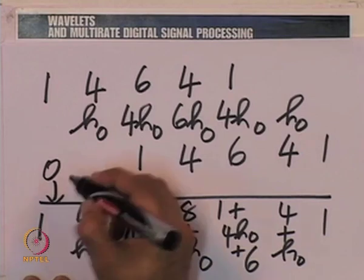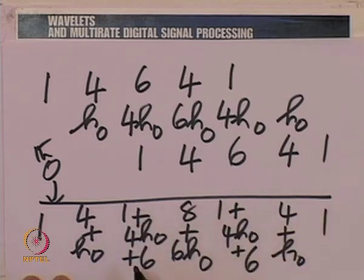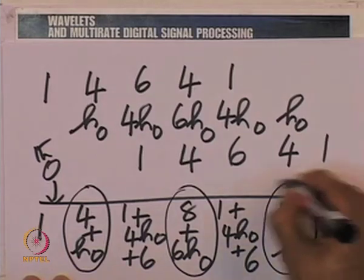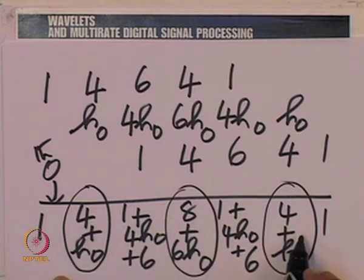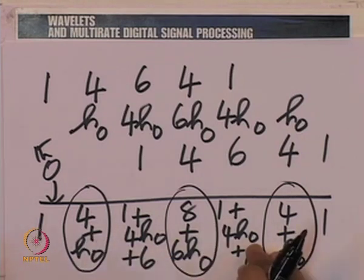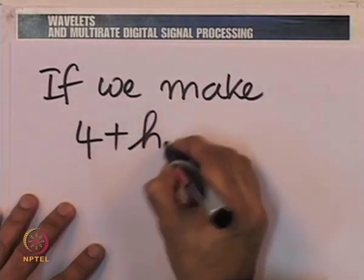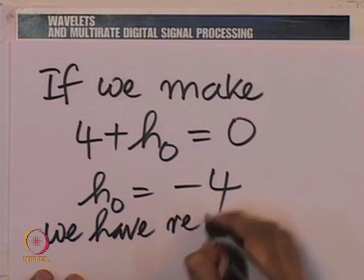The even samples — the 0th, 2nd, 4th, 6th — will be killed by the kappa_0(z) minus kappa_0(-z) operation anyway. What worries us is the odd samples. We are required to retain only one odd sample. Notice the odd samples at positions 1 and 5 are essentially the same: (4 + h_0). If we annul this sample by making (4 + h_0) equal to zero — in other words, h_0 equal to minus 4 — we have retained only one odd sample.